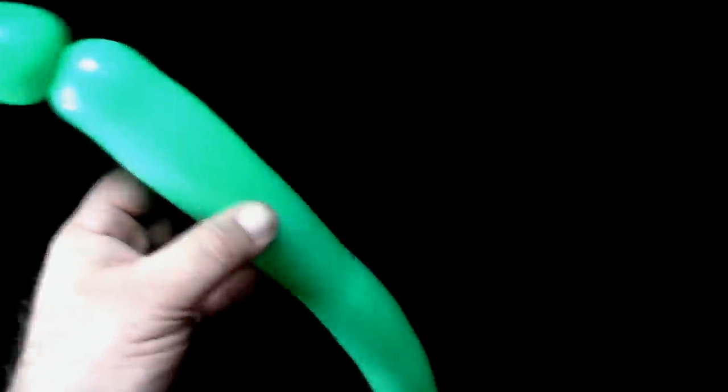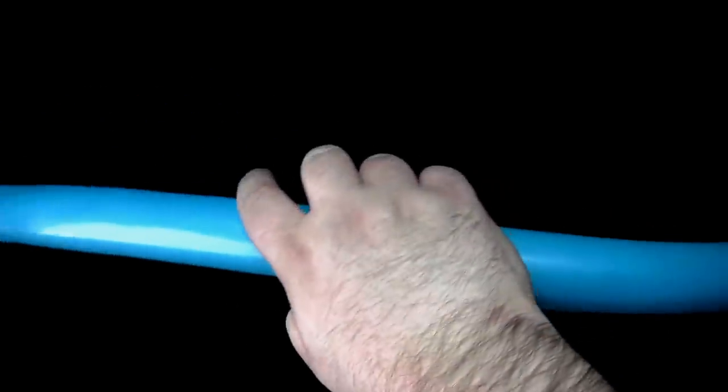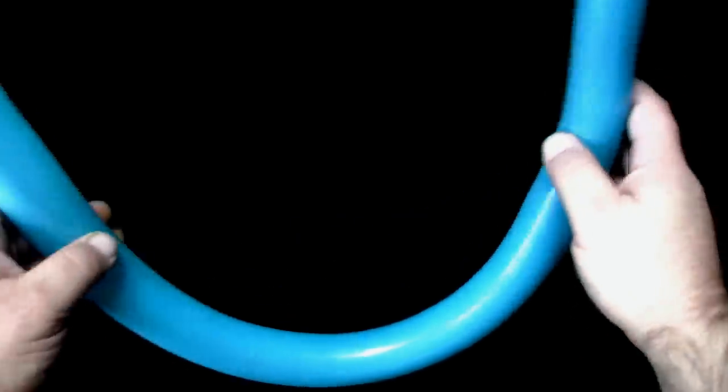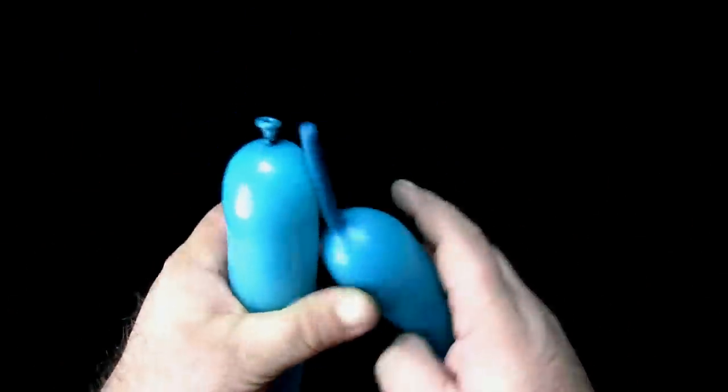Set this balloon aside for now to work on the balloon you will use for the petals. Tie the nozzle and the uninflated portion of the balloon together.